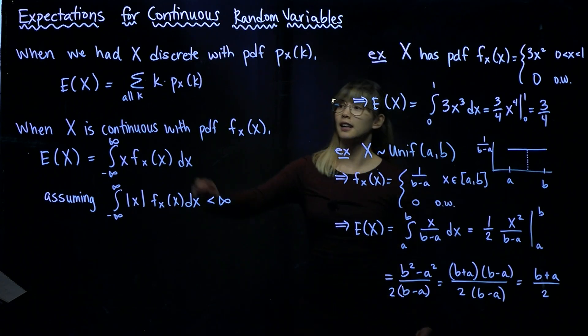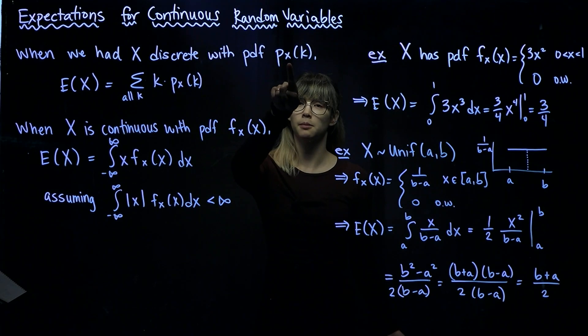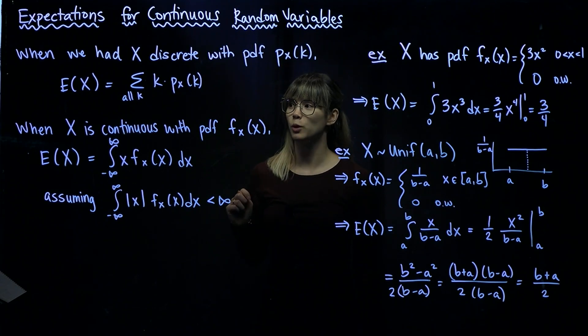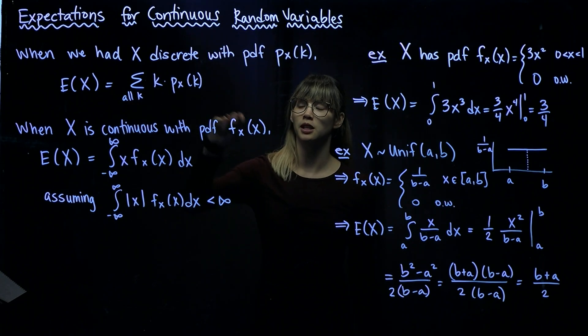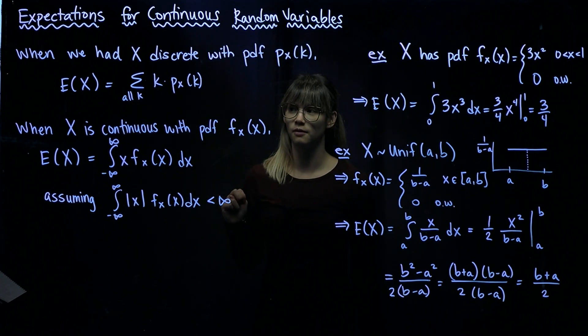So we discussed expectations in the context of discrete random variables before. If we had X being discrete with PDF P sub X of K, then we could calculate the expected value of this discrete random variable by summing over every value of this random variable times its probability of seeing that value.